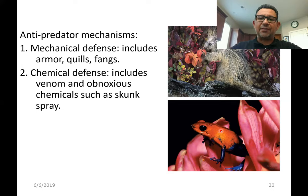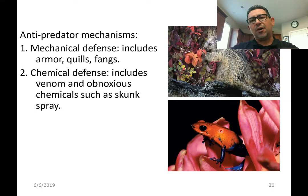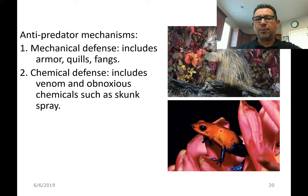Interestingly, the poison of these frogs is derived from the poison of ants they eat. Ants produce formic acid as one of their defenses. The frogs have immunity to the formic acid of the ants, and they actually end up using that same formic acid in the production of their own toxins — their own poison.